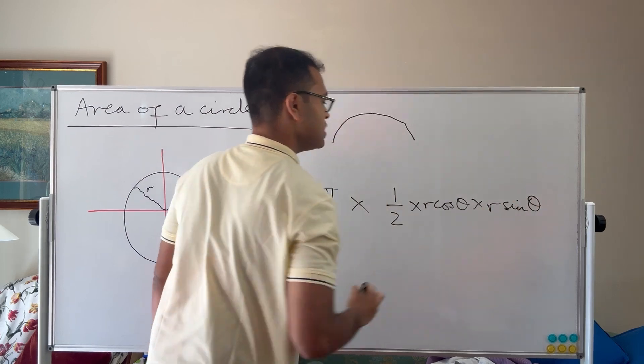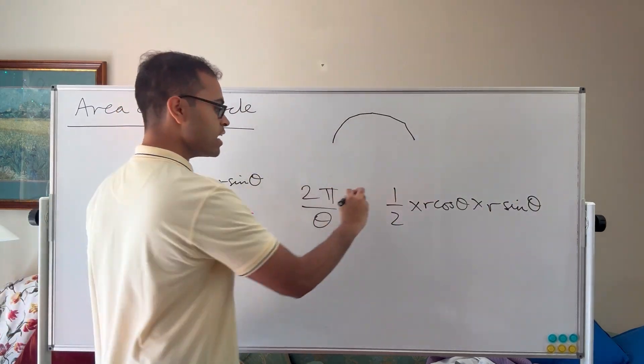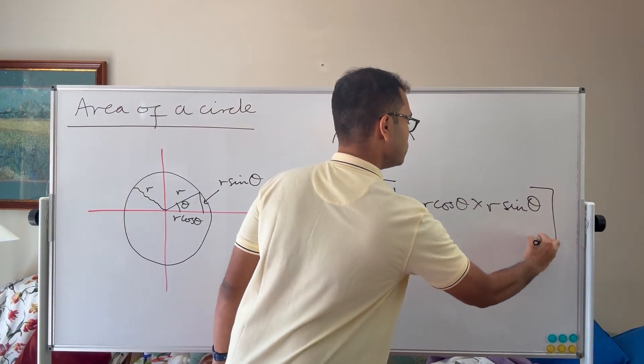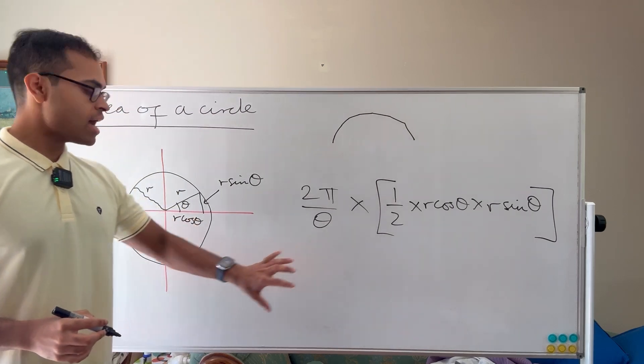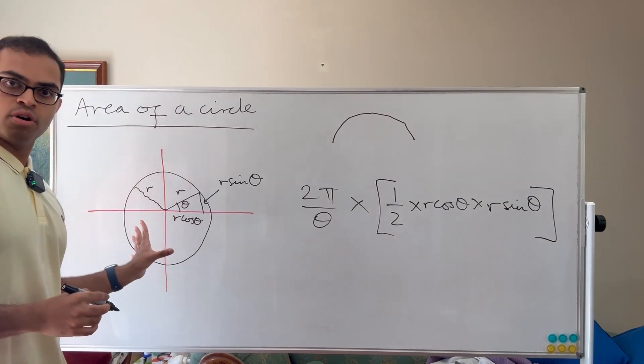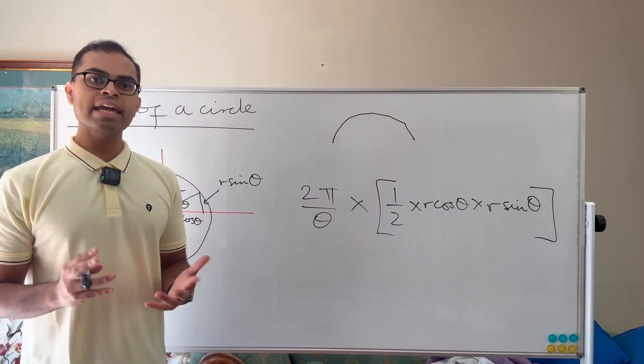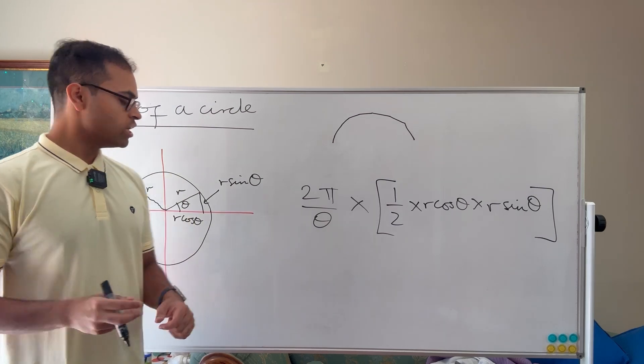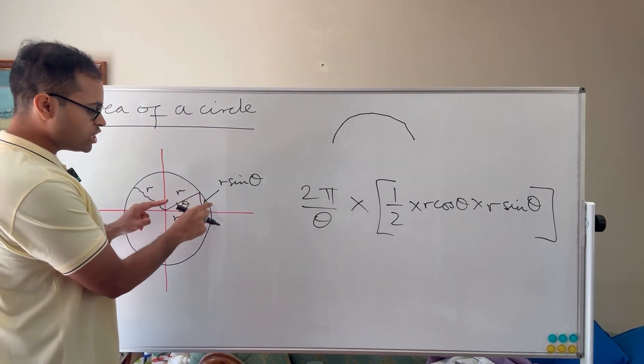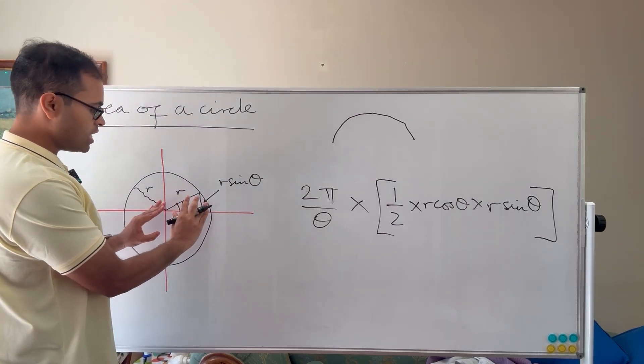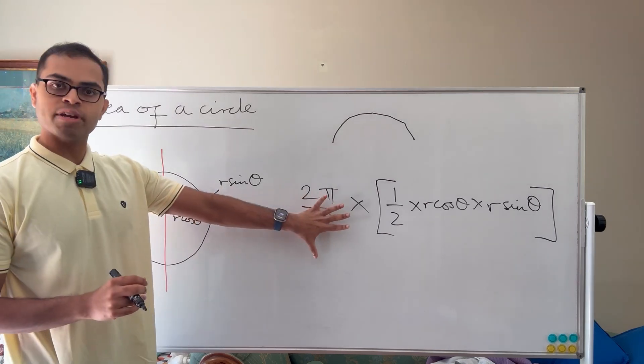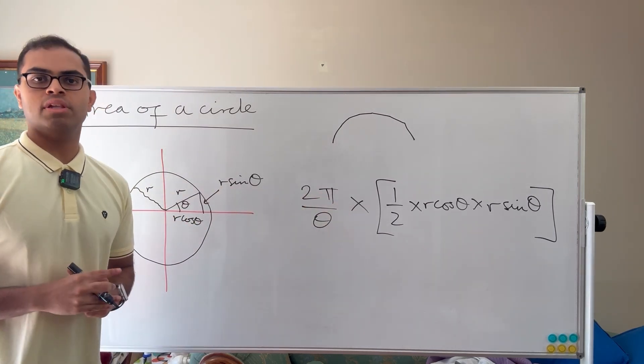That is going to be the area of the triangle in brackets. And then what we're going to do is multiply by 2π over θ because that's how many triangles are going to cover the whole circle. If you like, the circle is symmetrical. So if we just take this sector of the circle and find its area, and then multiply that by 2π over θ, we'd get the whole area of the circle.